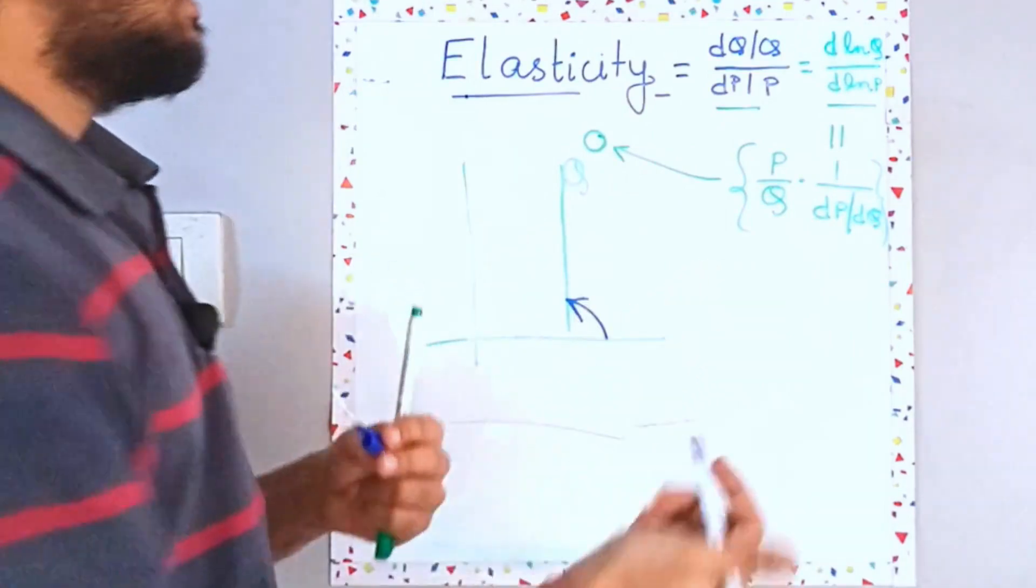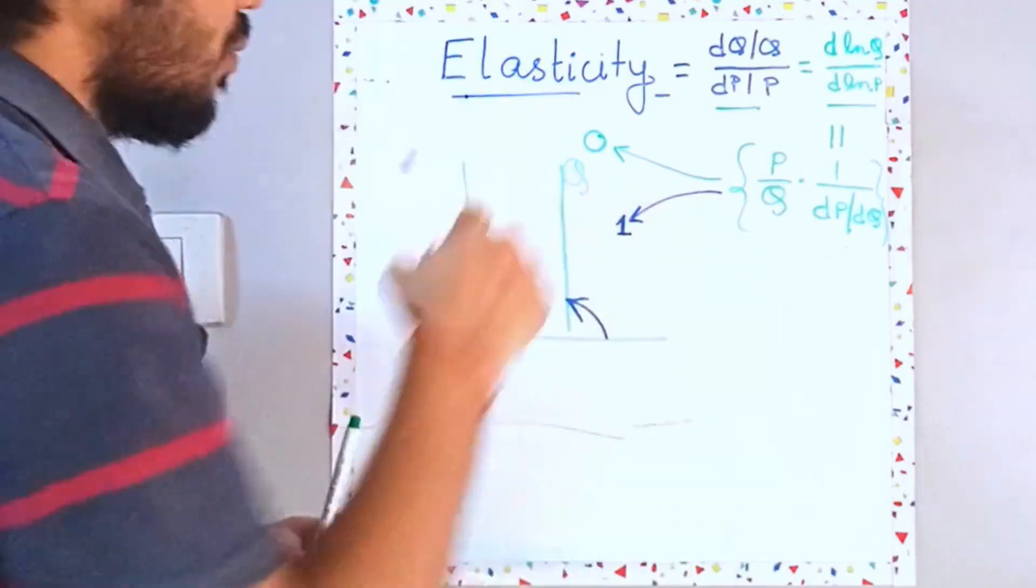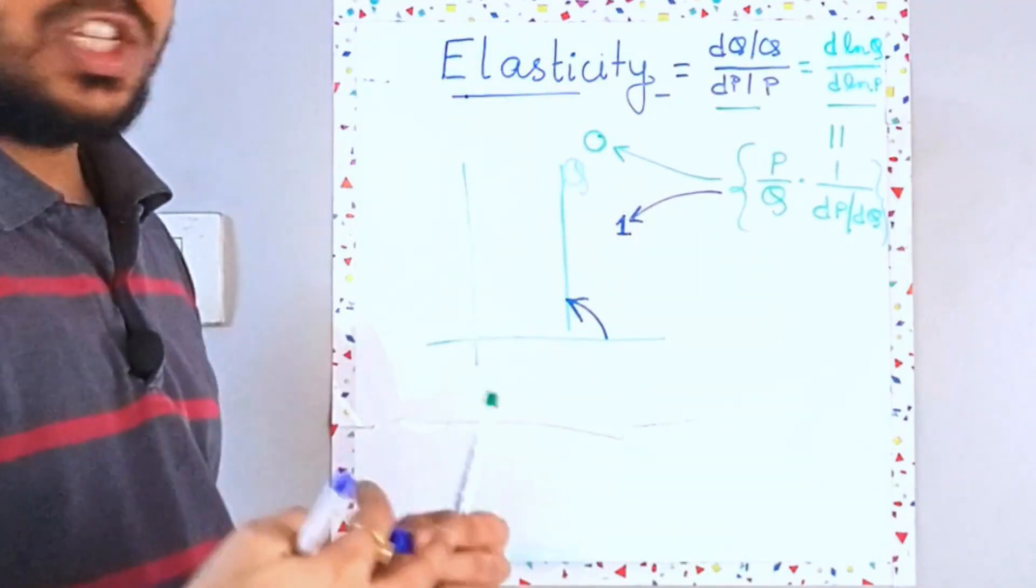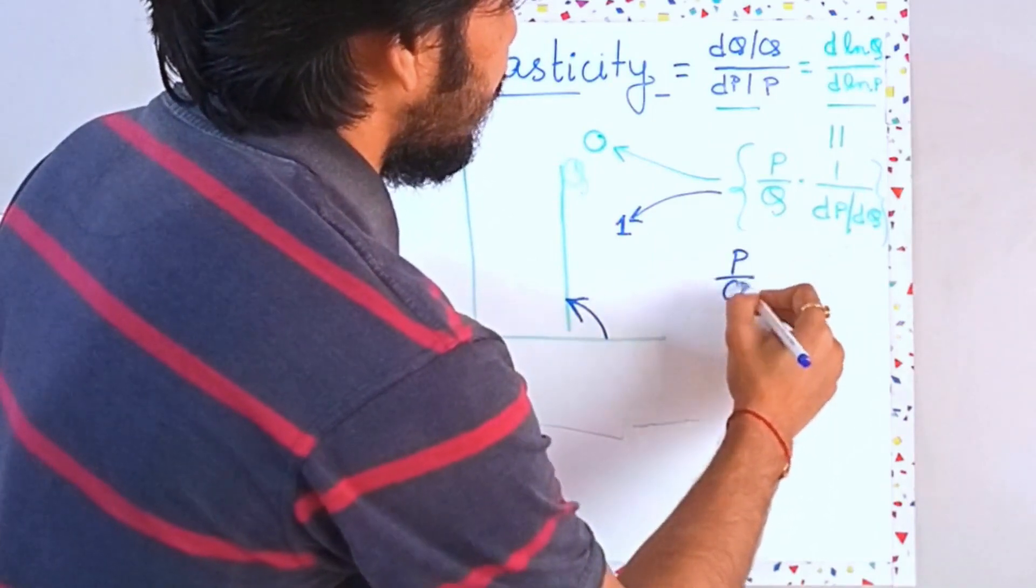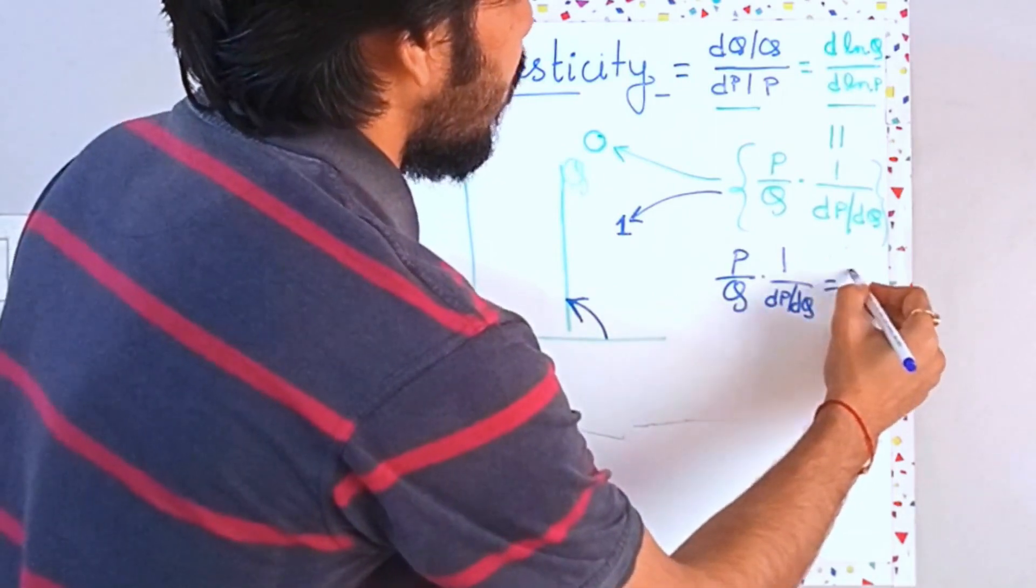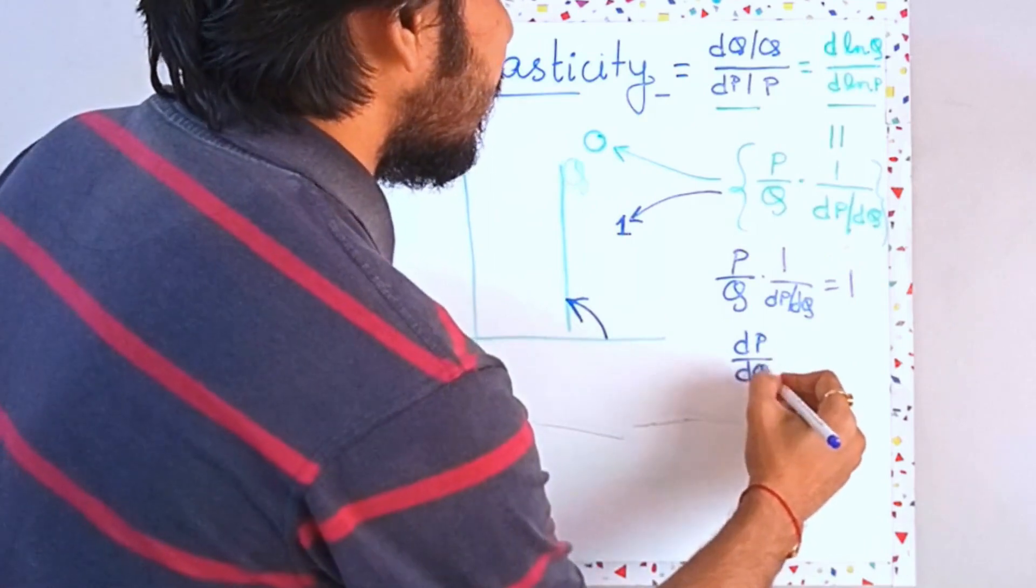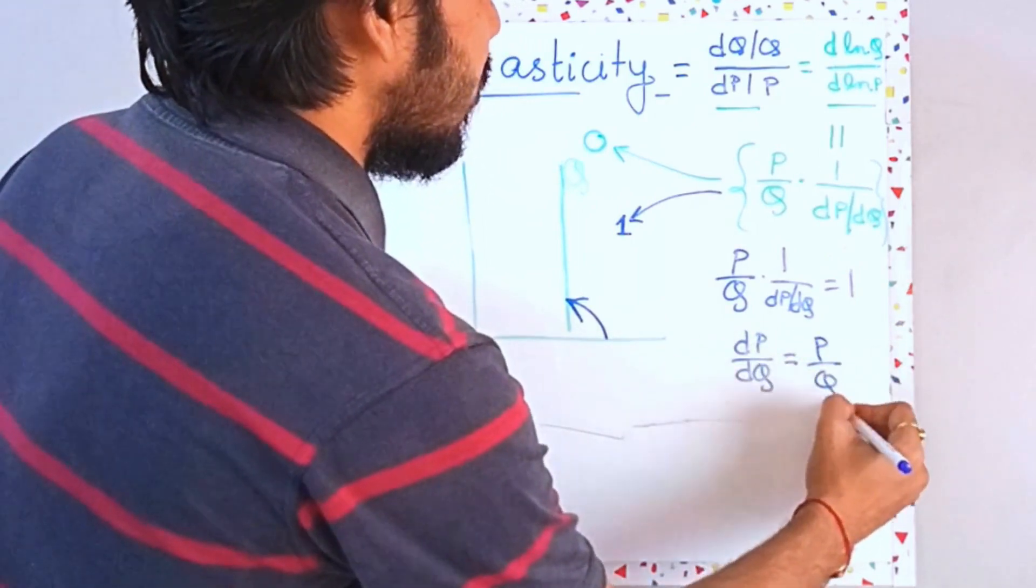What about the case when I have an elasticity of 1? For 1, what I need is a situation when your P by Q into 1 by DP upon DQ is equal to 1, which is simply DP upon DQ is equal to P by Q.